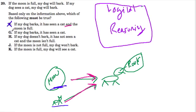If my dog doesn't bark, it has not seen a cat and the moon isn't full. So again, that's true because in this universe the only two things that cause the dog to bark are the full moon and the cat. So if the dog's not barking, there can't be a full moon or a cat, right? That's because if they were there, those things would cause the dog to bark. So H is true, but let's look at the other choices.